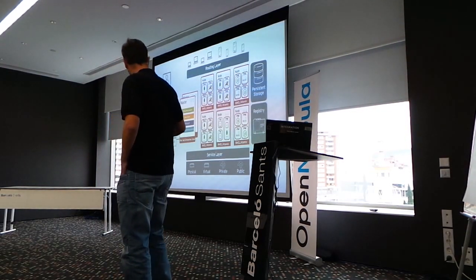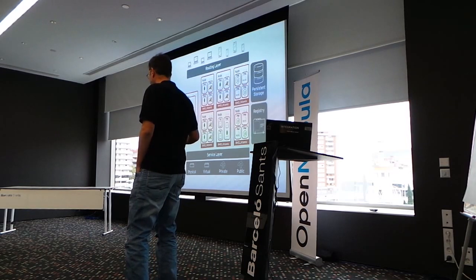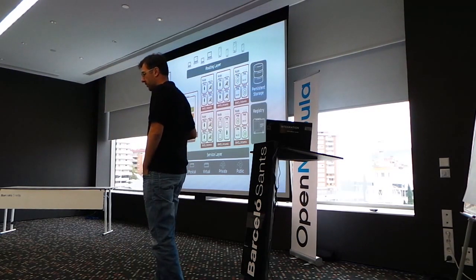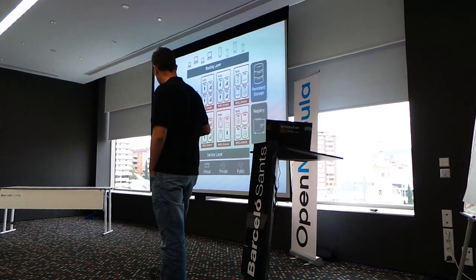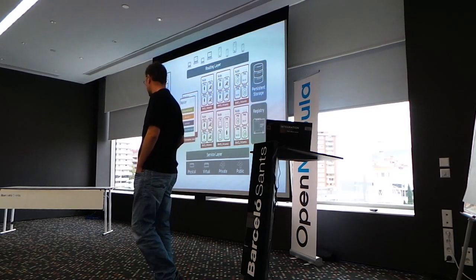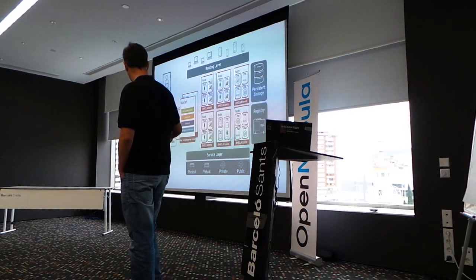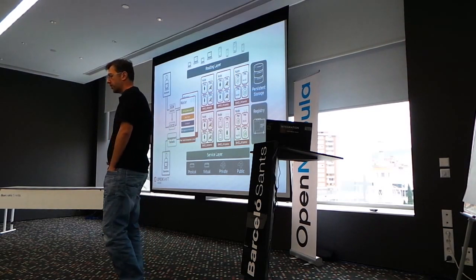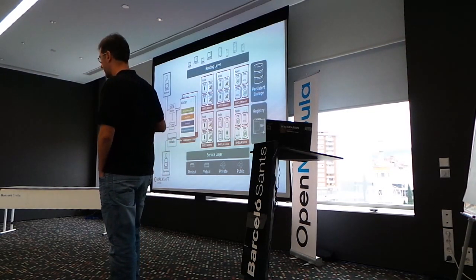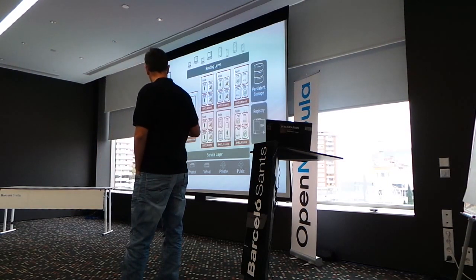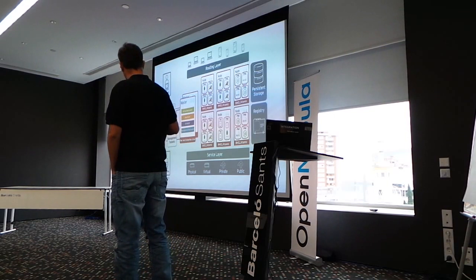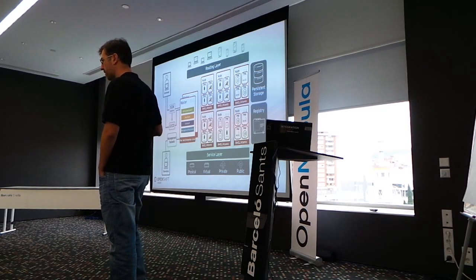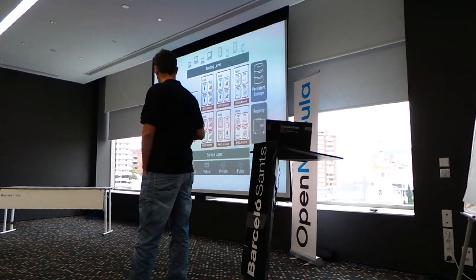OpenShift runs on any hardware you have, or most clouds — physical or virtual servers, public cloud, private cloud, or hybrid cloud. On top of that, we provide a set of nodes that will run your workloads — this is where your applications will be running, and they are called nodes. Then we have a set of hosts dedicated for management purposes, for controlling all your operations, called master nodes.